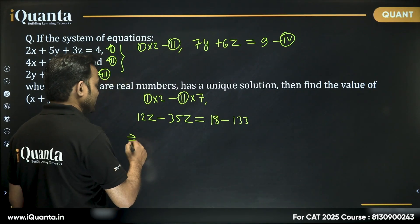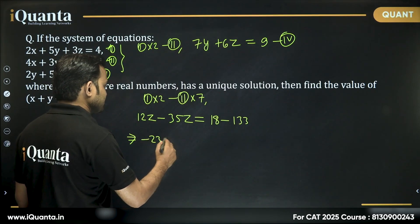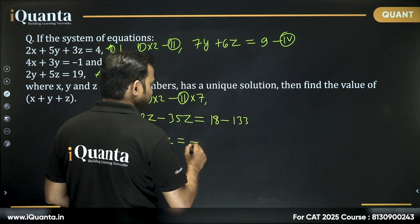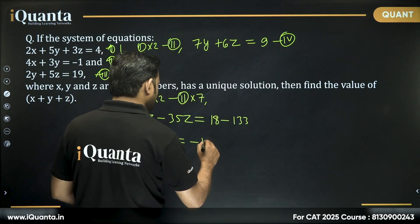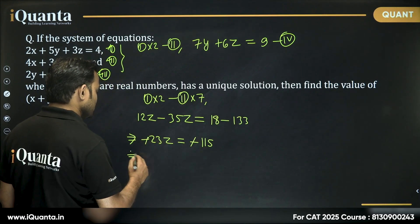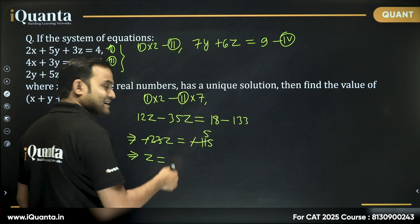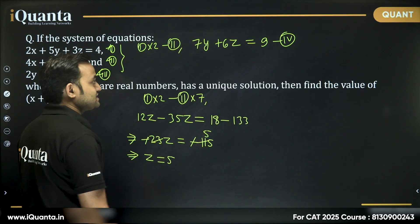From there, we get -23z = -115. So z = 115/23. 23 times 5 is exactly 115, so z = 5.